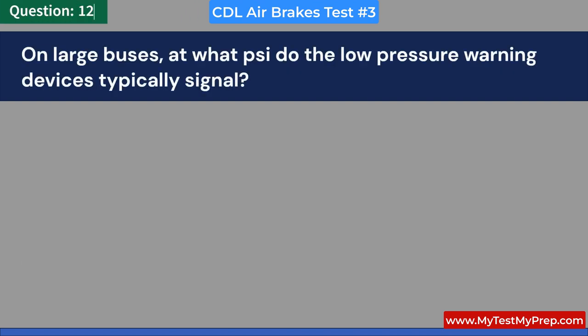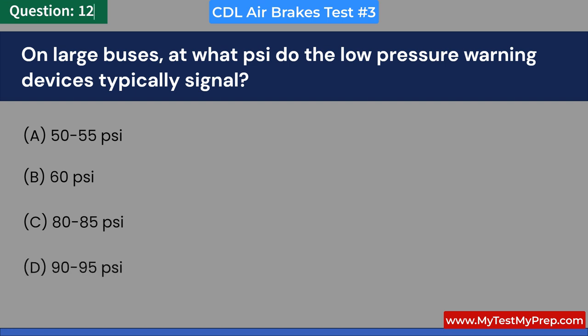On large buses, at what PSI do the low pressure warning devices typically signal? A. 50–55 PSI. B. 60 PSI. C. 80–85 PSI. D. 90–95 PSI. Answer: C. 80–85 PSI.